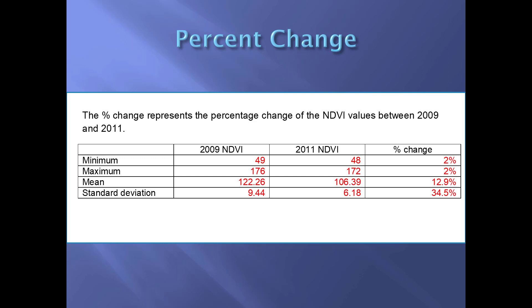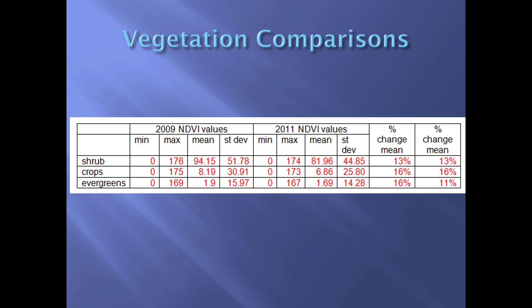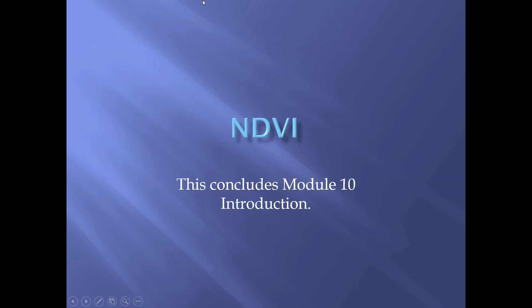Here is a graph showing the percent change you can expect, with values from your module representing 2009–2011 comparisons of minimum, maximum, mean, and standard deviation. There is also a resultant table showing vegetation comparisons of shrub, crops, and evergreens. You may not get the exact same numbers, but your percent change should be pretty close to the values shown here. That concludes the introduction for Module 10.